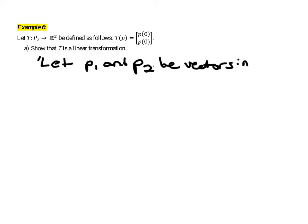We put the word vectors here in quotations. It's not the way we normally think of vectors because P1 and P2 are both going to be quadratic polynomials or polynomials of degree 2 or lower.